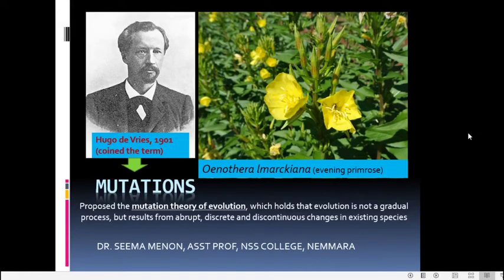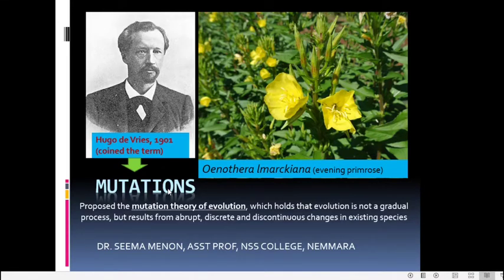Mutations refer to changes or variations which occur in the members of a population. But these changes are not gradual — they appear suddenly and are abrupt, discrete, and discontinuous. So these are the sudden and discrete and discontinuous variations which appear in populations.